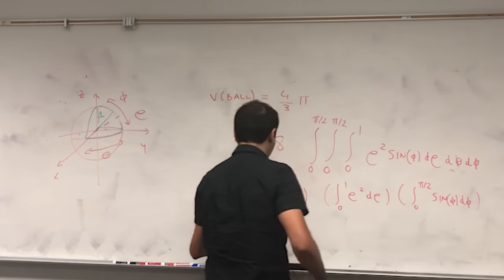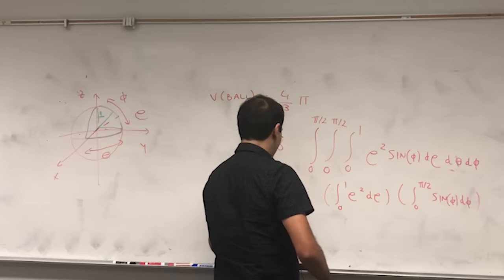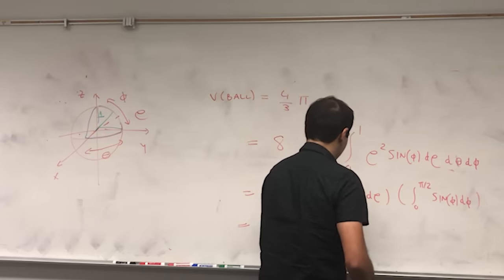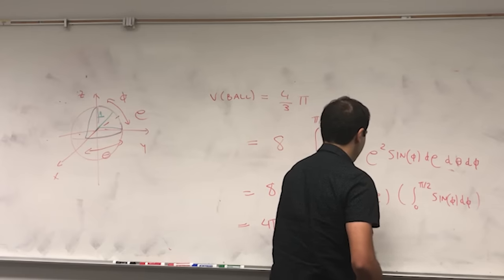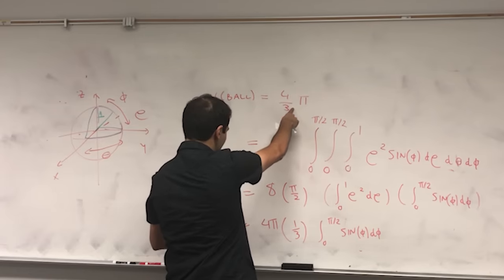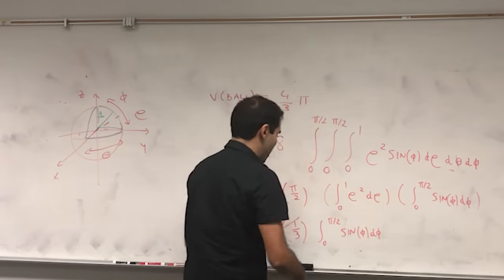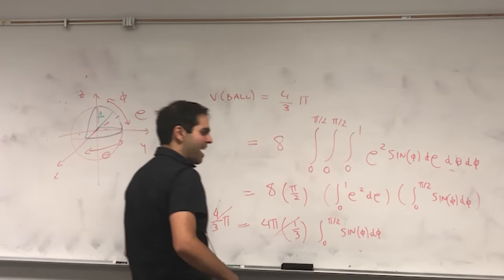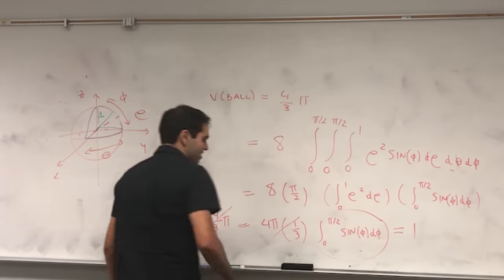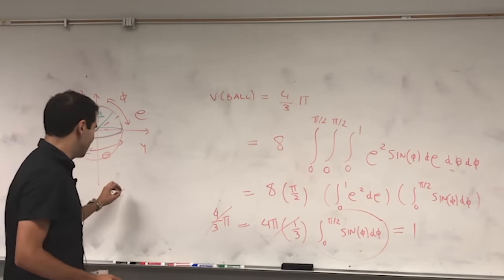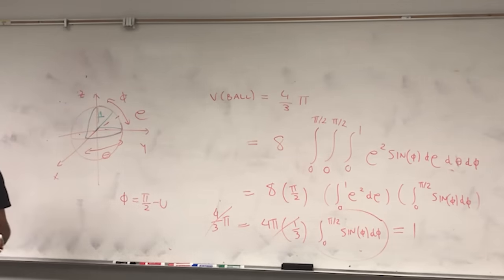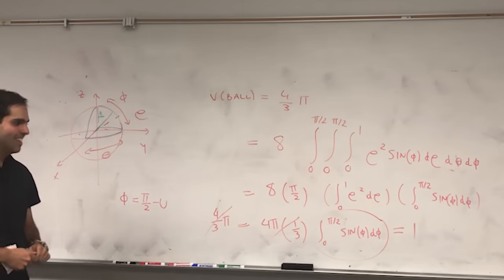This gives (4/3)pi = 4pi·(1/3)·∫₀^{pi/2} sin(phi) d(phi), so the integral equals 1. And if you're picky you can use a u-substitution phi = pi/2 - u to also get that the integral of cosine is 1.